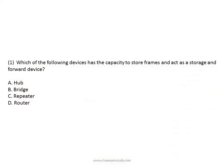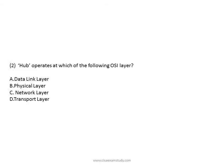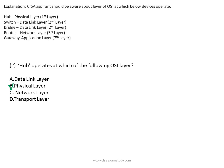Let us discuss some questions. Which of the following devices has the capacity to store frames and act as a storage and forward device? — Bridge. Hub operates at which OSI layer? — Layer 1, physical layer. Important note: Hub operates at physical layer, switch at data link layer, bridge at data link layer, router at network layer, and gateway at application layer.